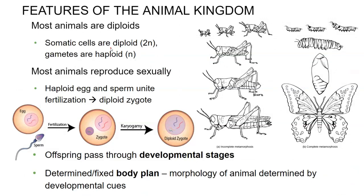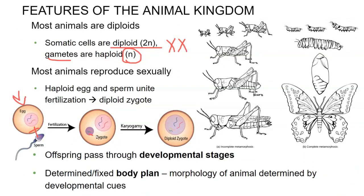Most animals are diploid as an adult. There are some exceptions, and we'll talk about those next. A diploid means that you're going to get one copy of your genes from mom and one copy of genes from your dad — you have two copies of the same genes, but they may be slightly different variations. That means that the gametes, or the egg and sperm, are going to be haploid. When an egg joins a sperm, they come together in a fertilization event to produce a zygote. After karyogamy, which just means the nuclei fuse, we have a diploid zygote, which has the potential to become the full-grown adult of that organism's species.